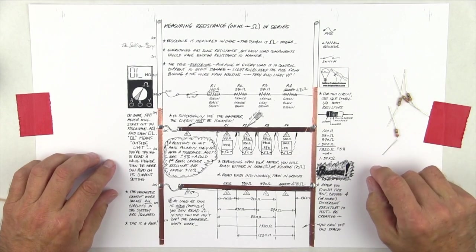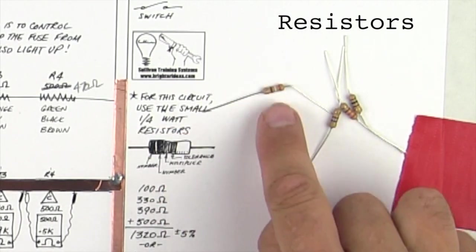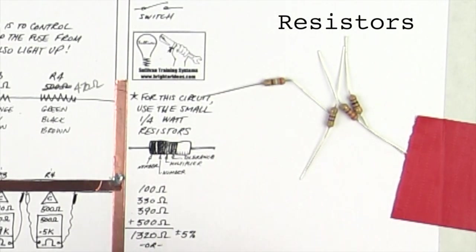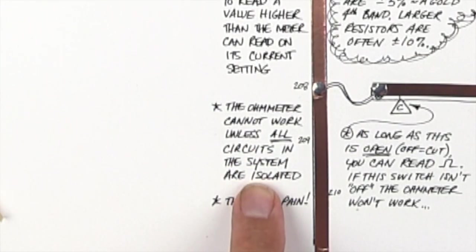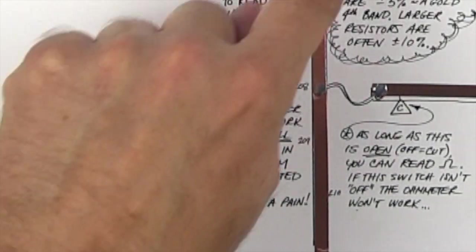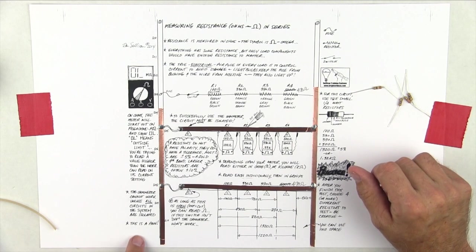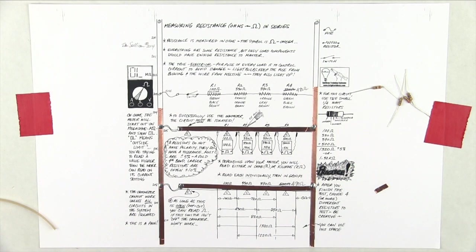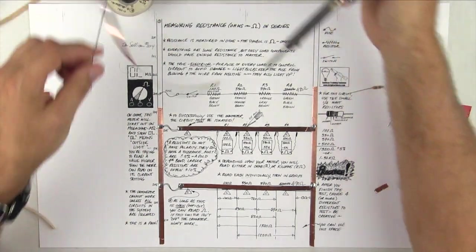A couple of quick notes, these are actually half watt, and you can use quarter watt, but these are half watt. They're a little bit bigger, a little bit easier to see. Another note here says you cannot use the ohmmeter unless all circuits are isolated. I'm going to demonstrate that here in a minute, and it says this is a pain, and it is.